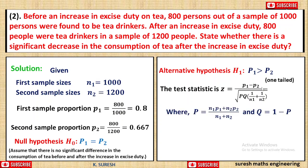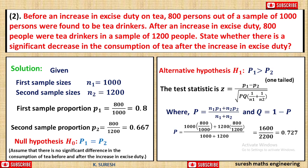We know P1, P2, N1, N2, and we need capital P and Q. Capital P is calculated as N1 times P1 plus N2 times P2, divided by N1 plus N2. We get capital P equal to 0.727.